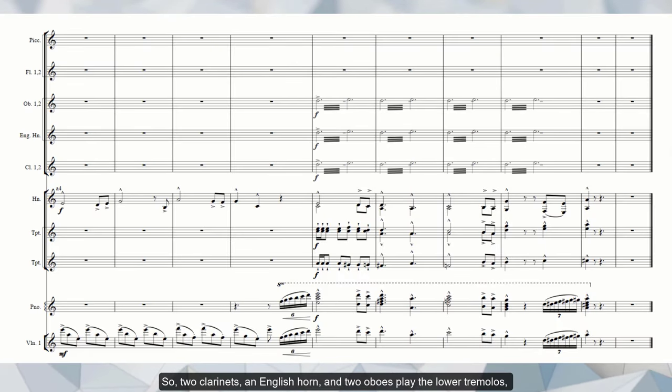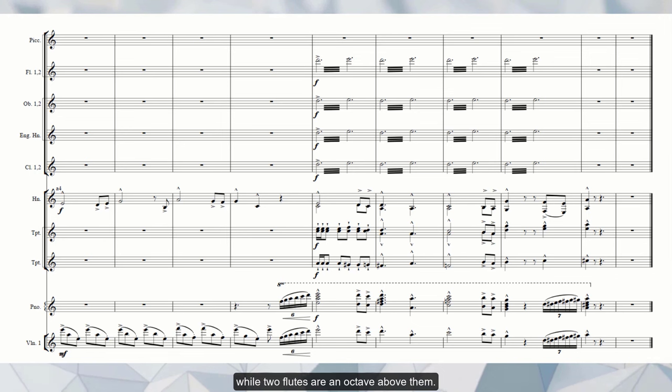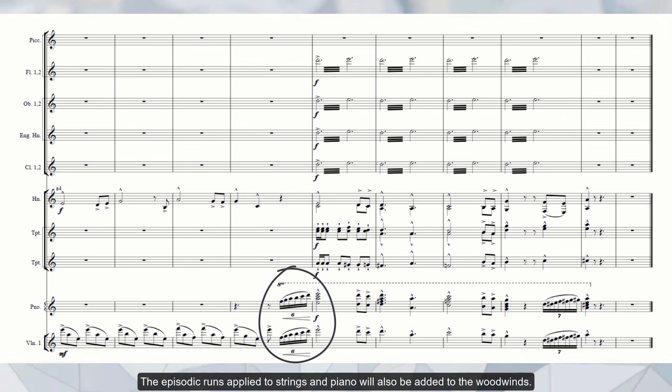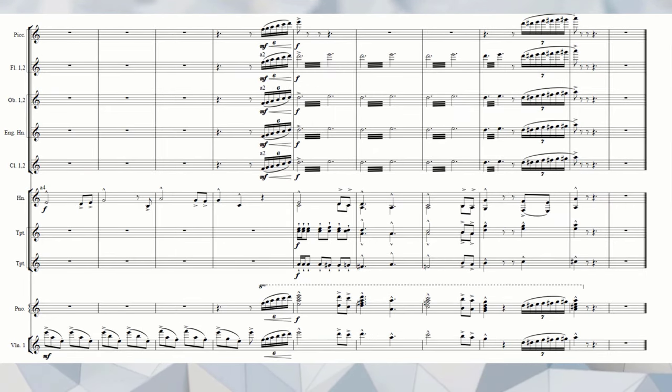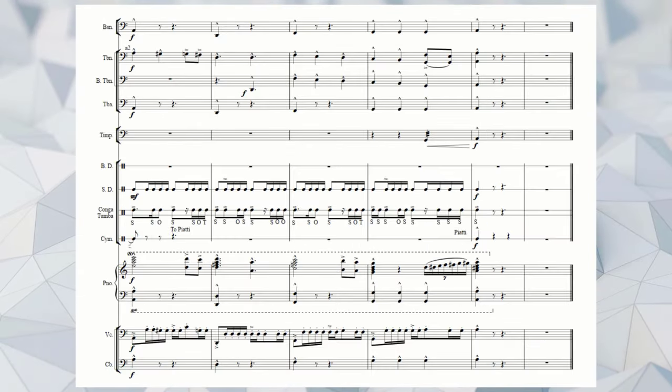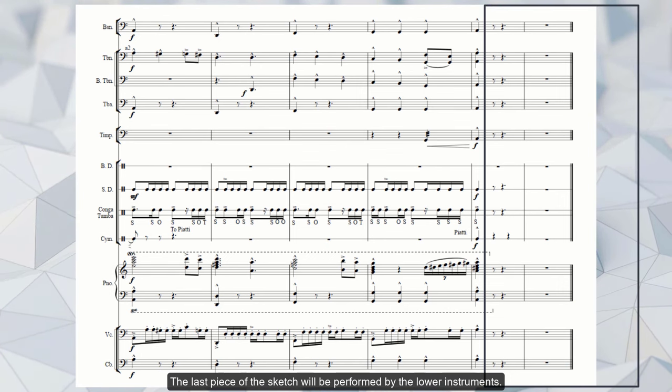So, two clarinets, an English horn, and two oboes play the lower tremolos, while two flutes are an octave above them. These are the single-line tremolos. However, the chordal tremolos also work well. The episodic runs applied to strings and piano will also be added to the woodwinds. The last piece of the sketch will be performed by the lower instruments.